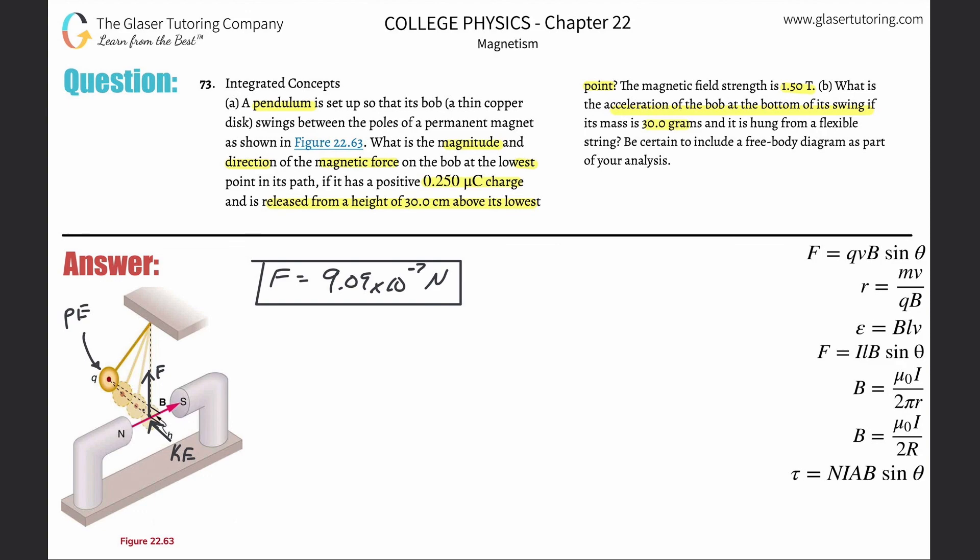Now what they want us to do is find that acceleration. If we know force and we know mass, what's going to be the formula? We have F equals ma. Solve this for acceleration, so this is simply the force over the mass. Plug it in: 9.09 times 10 to the minus 7th all divided by the mass. Careful, you need that in kilograms, so 0.03. Let's see what we get. Divide that by 0.03 and voila, 3.03 times 10 to the minus 5th meters per second squared.